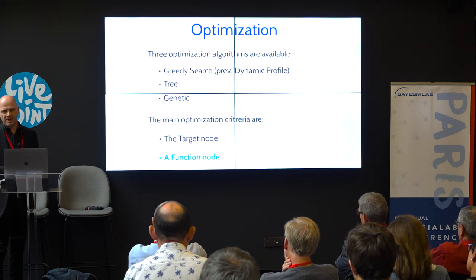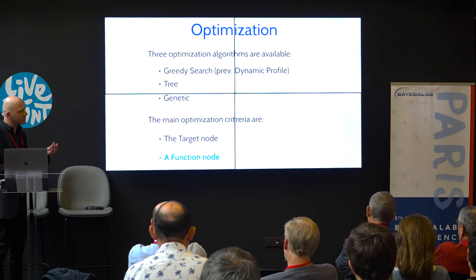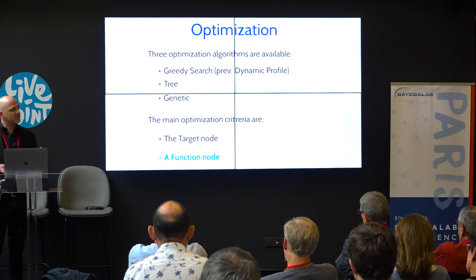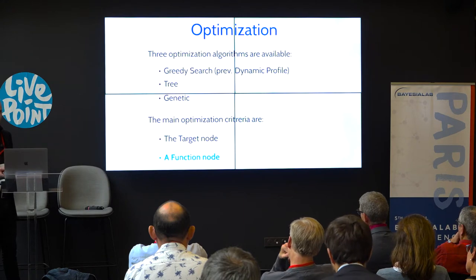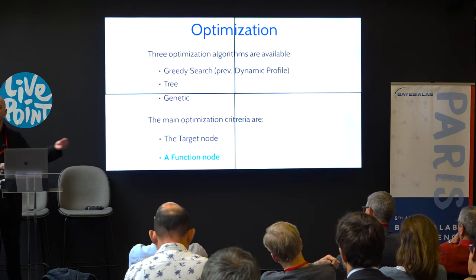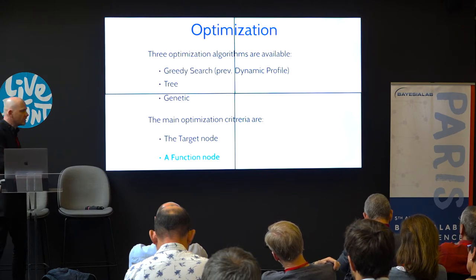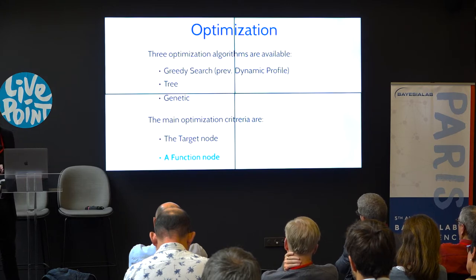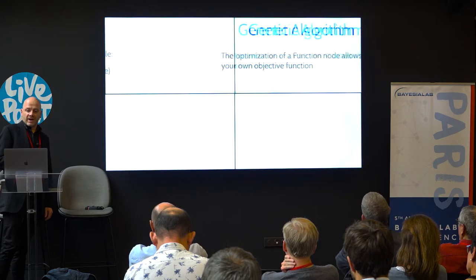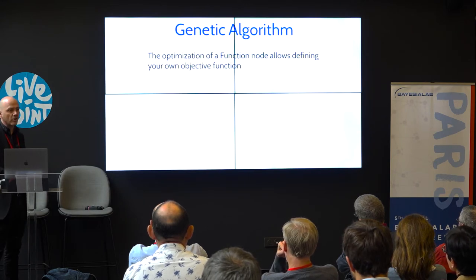A function node is something we introduced in version 6. It is not a node of a Bayesian network but a node that summarizes a joint probability distribution. With this node you can compute the entropy of a set of nodes, or the maximum probability of one state. It's like having a small API — you can use inference results inside your network. A function node can be a child or a parent, and you can use entropy to define your probability distribution. Thanks to this, you can define your own objective function for the genetic algorithm — previously we had to pre-define a fitness function, but now you have all the degrees of freedom you want.